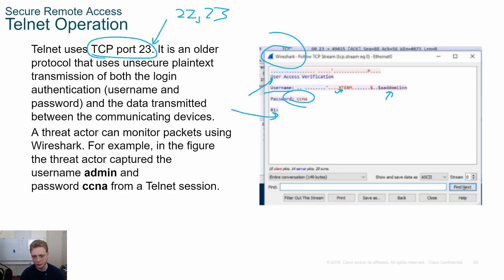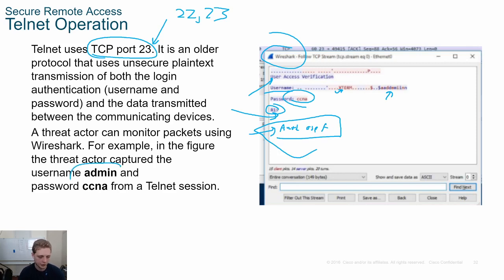On top of that, they can see the prompts the router sends back to you. They can see any configuration commands you put in — maybe you're putting in authorization for OSPF or something. They can see all that information: username, admin, password — all that stuff is right there.